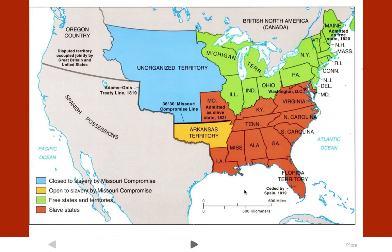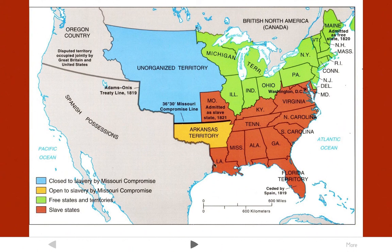Looking at the map, the green states represent free states and red states represent slave states. Adding Maine — previously part of Massachusetts — as its own free state, while also adding Missouri as a slave state, kept the number of slave and free states roughly equal, so neither side had more power in Congress. The compromise line is then set up so that anything north of it would be free and anything south would be slave, effectively dividing the country in half. This compromise worked and kept both sides happy in 1820.